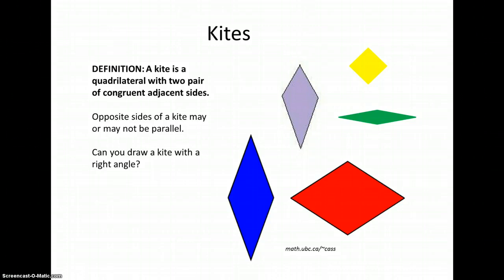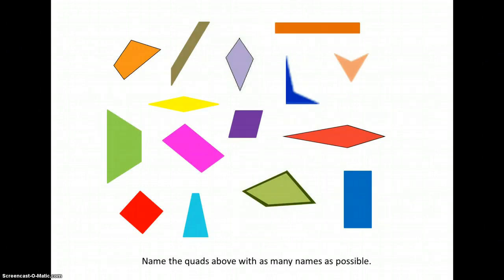Opposite sides may be parallel, or they might not. Can you draw a kite with a right angle? Name the quads above, giving as many possible names for each shape.